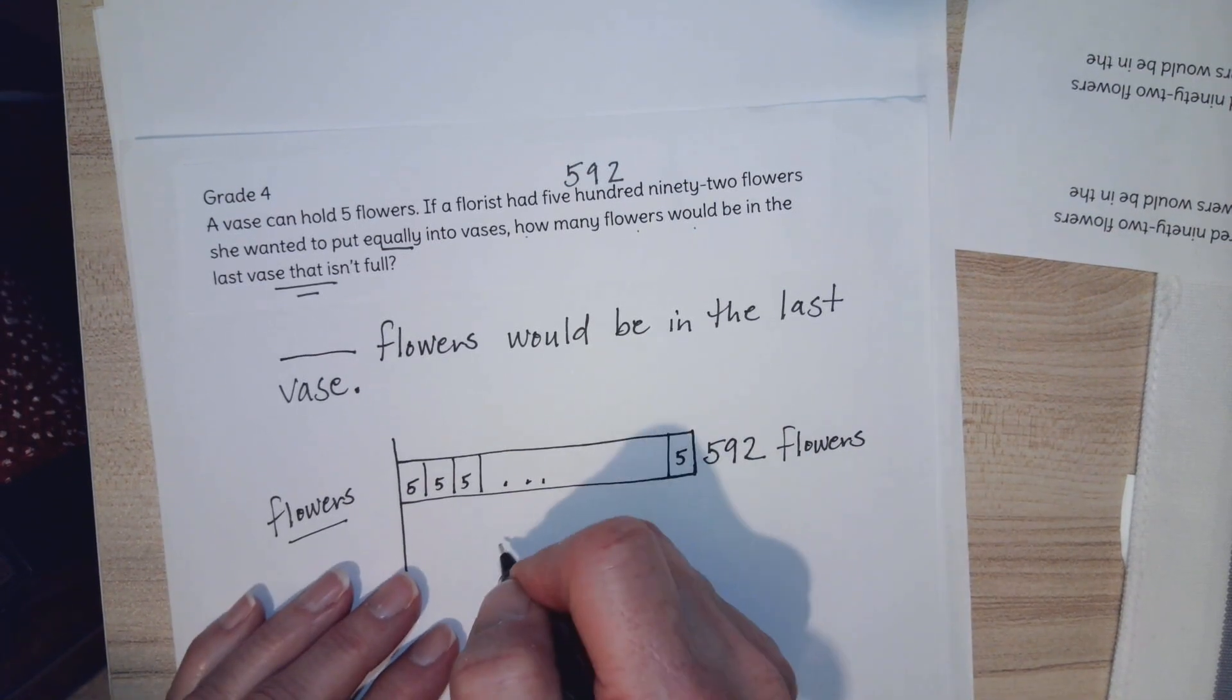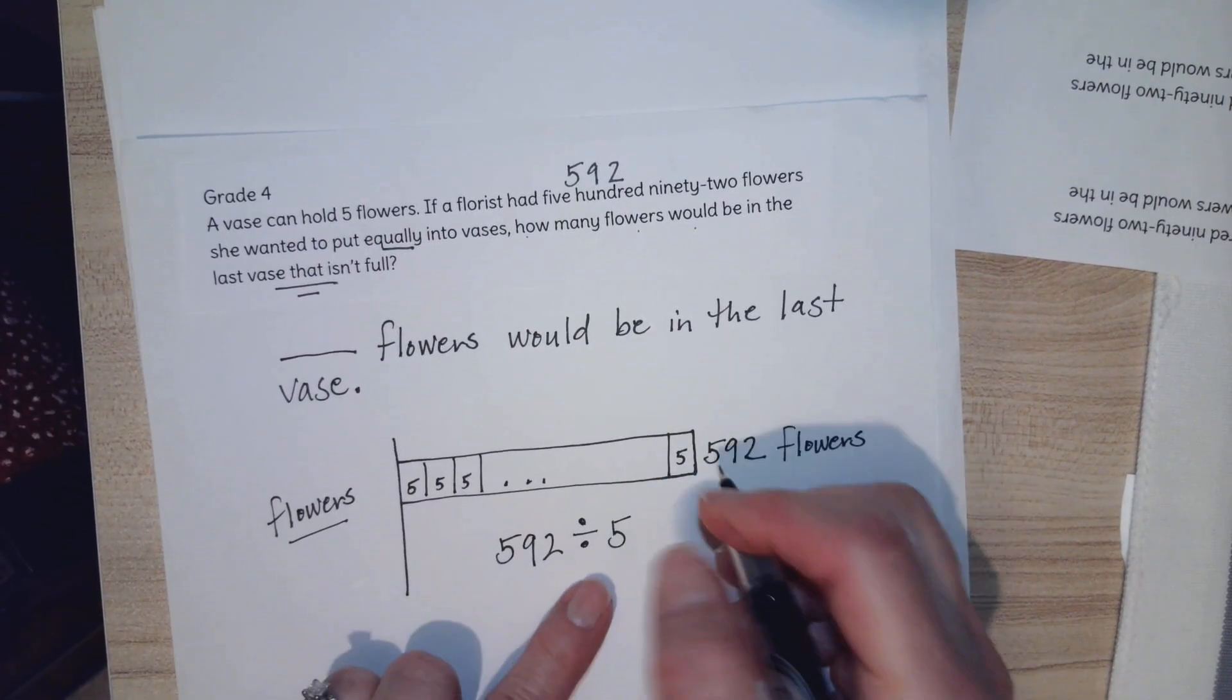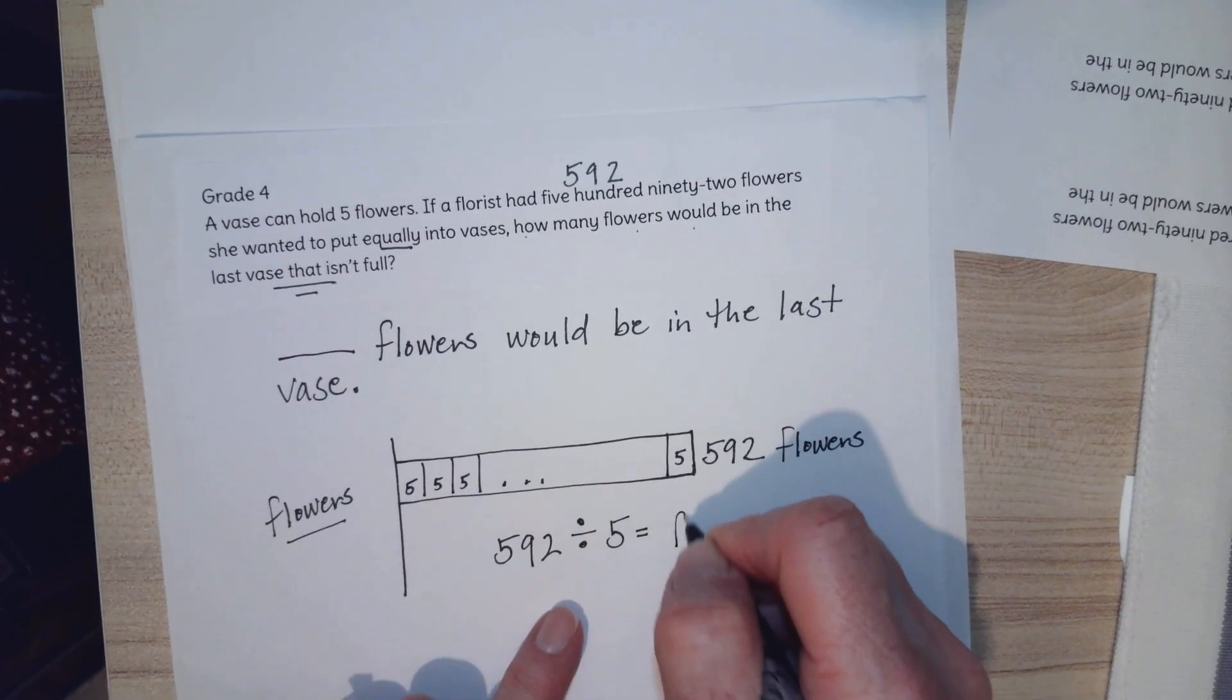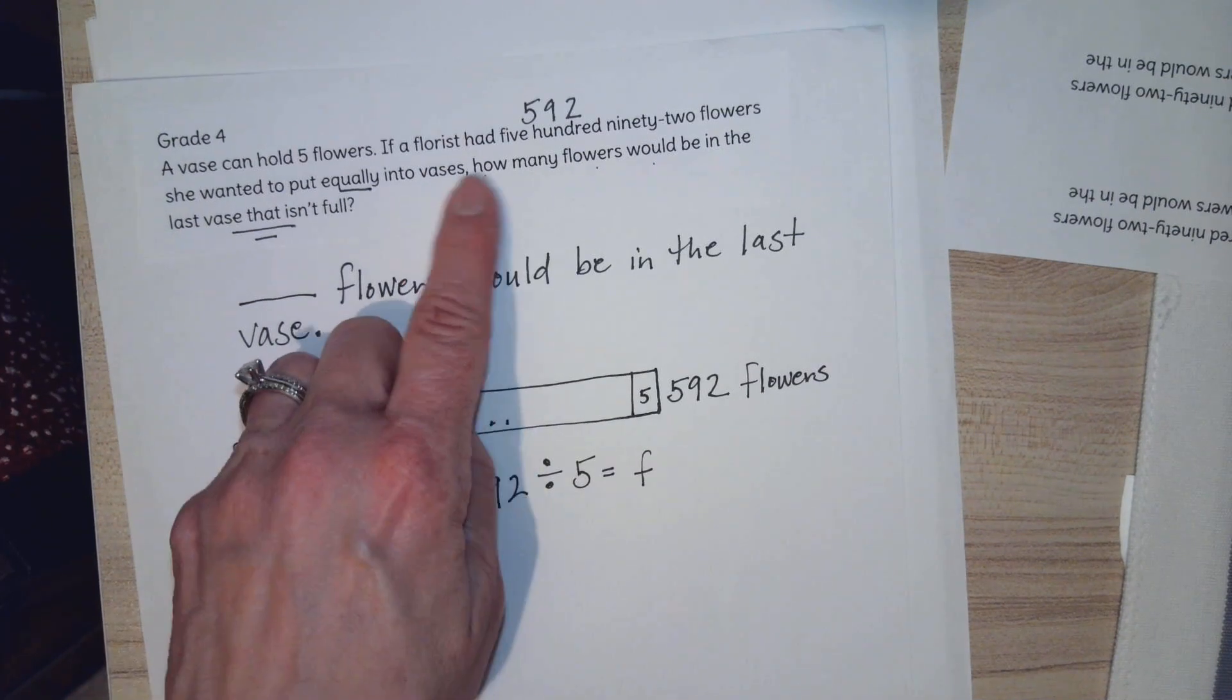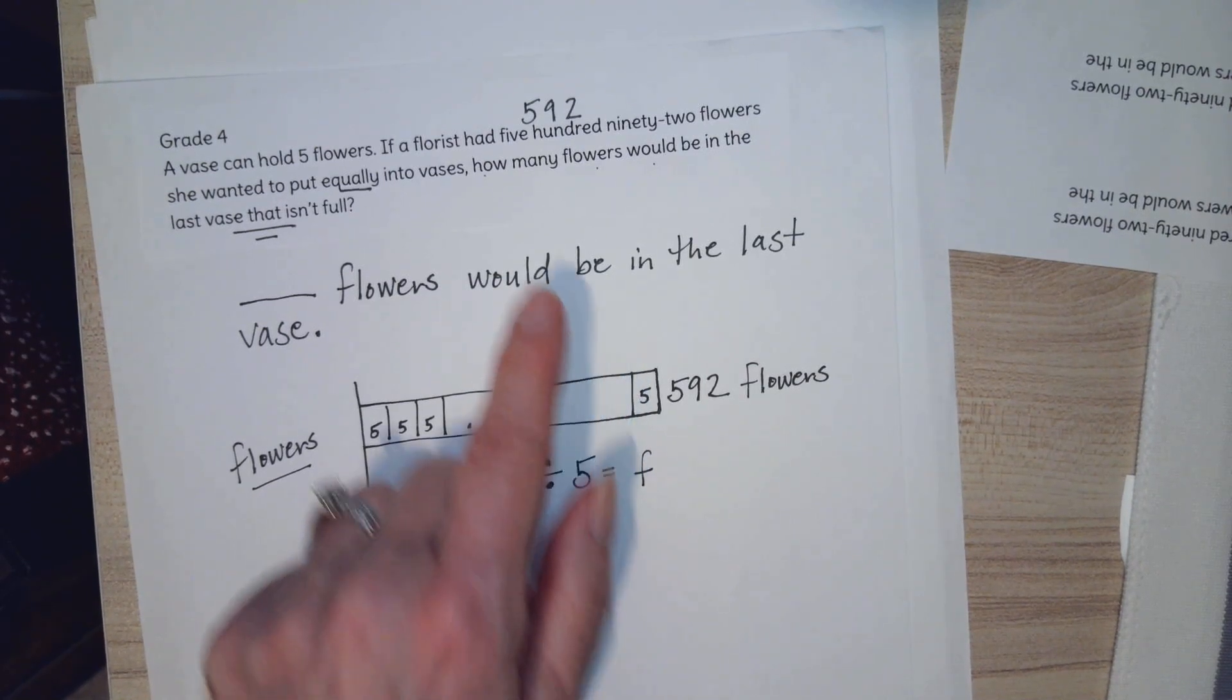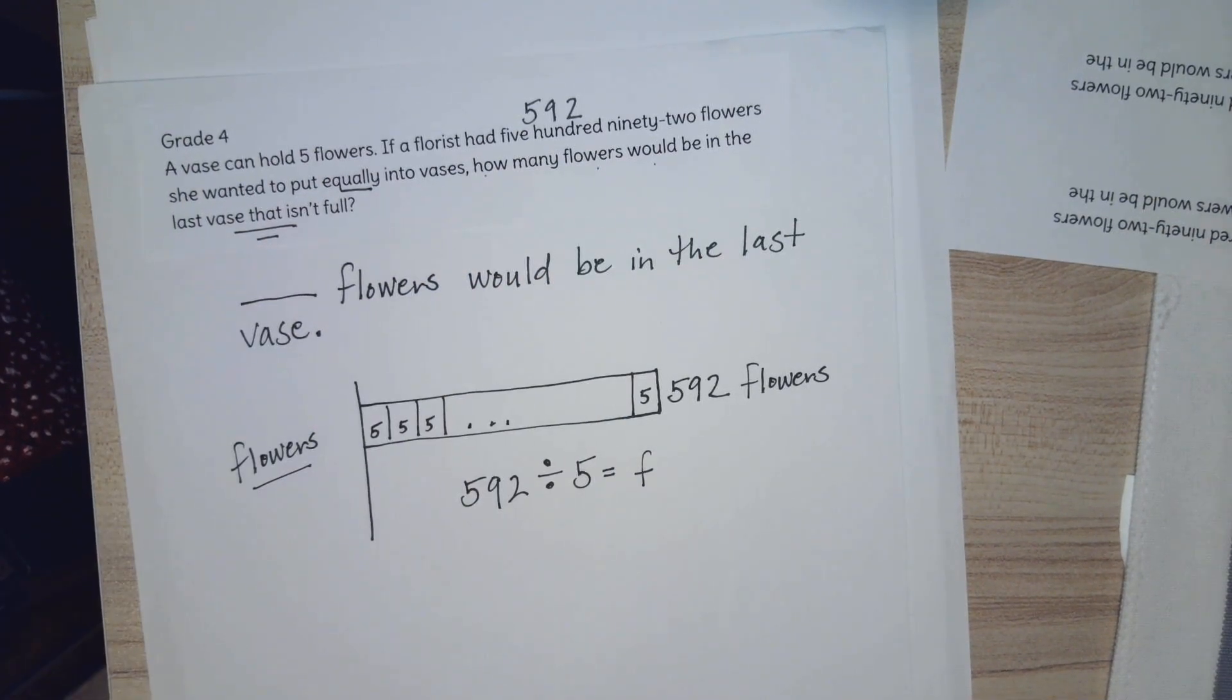Which means my equation would be 592, my total, divided by how many are in a vase, would give me flowers. Now this isn't going to give me my answer because my answer is actually going to be what the remainder is. They don't want to know how many full vases you're going to have. They want to know how many flowers would be in the last vase that isn't full.